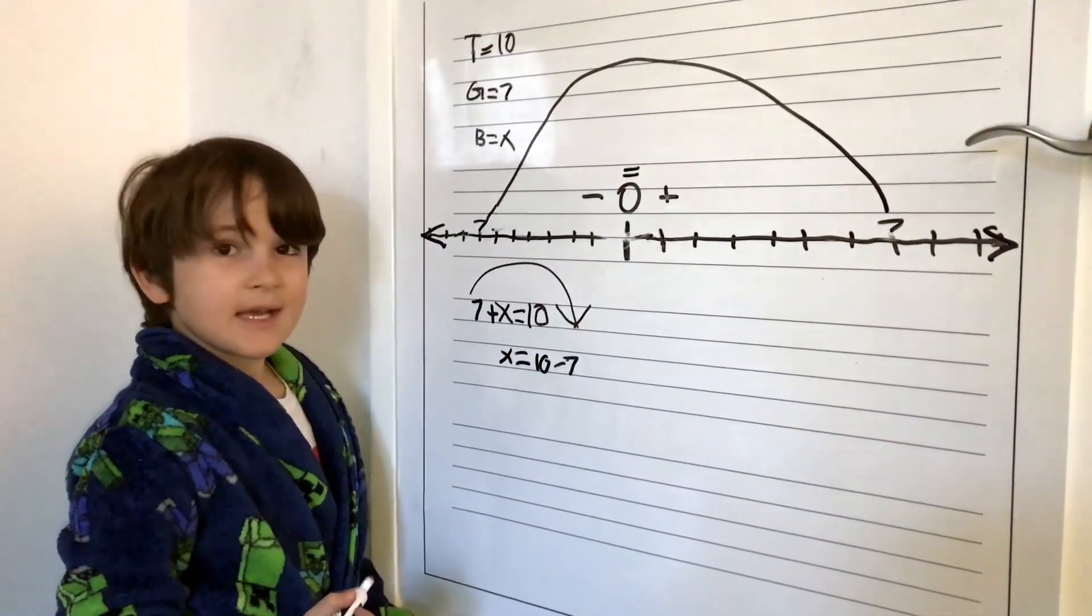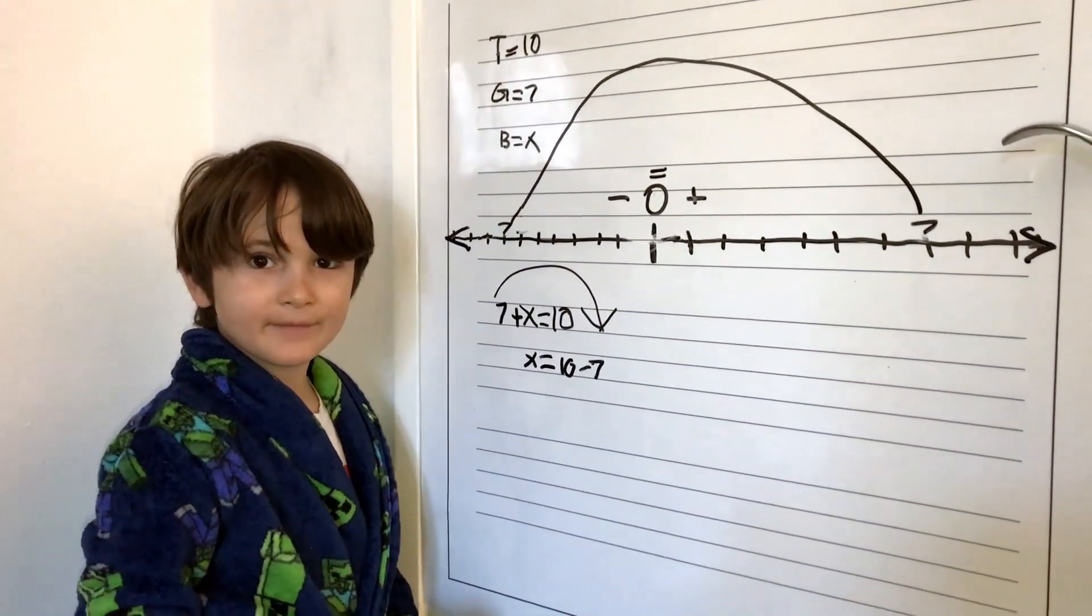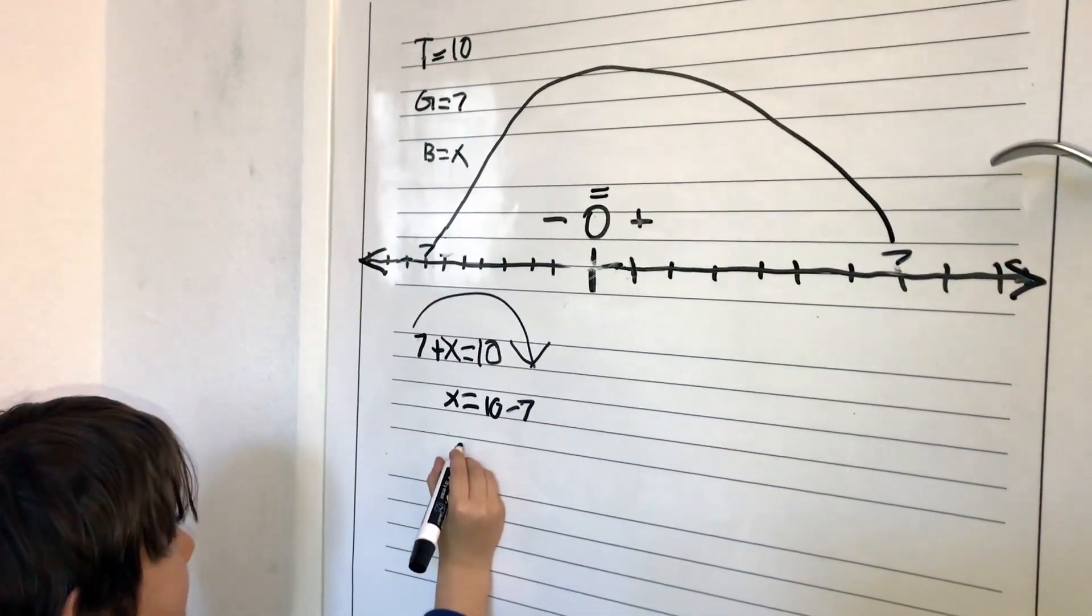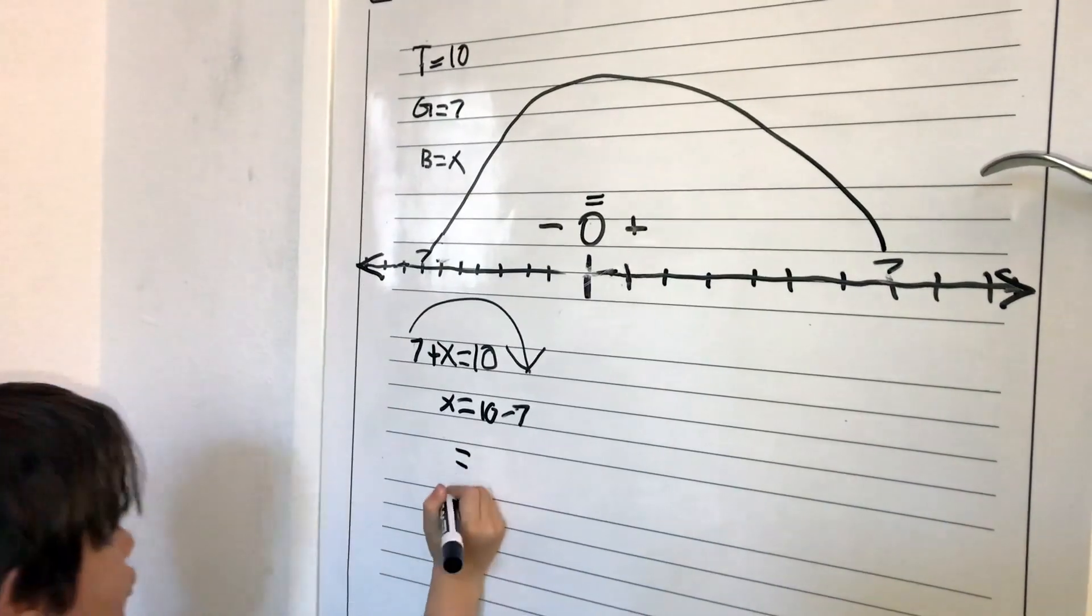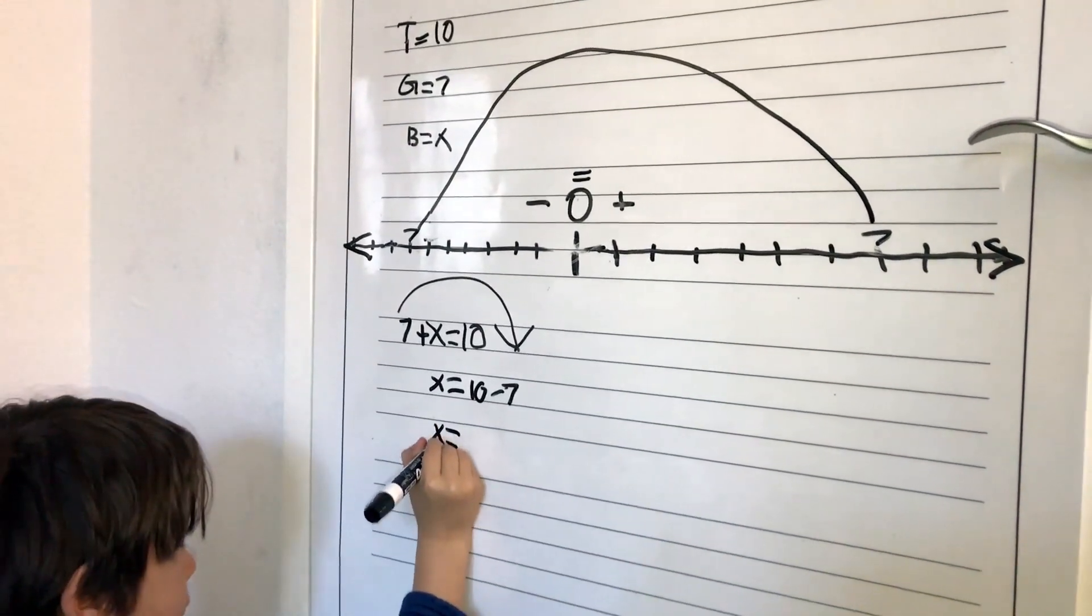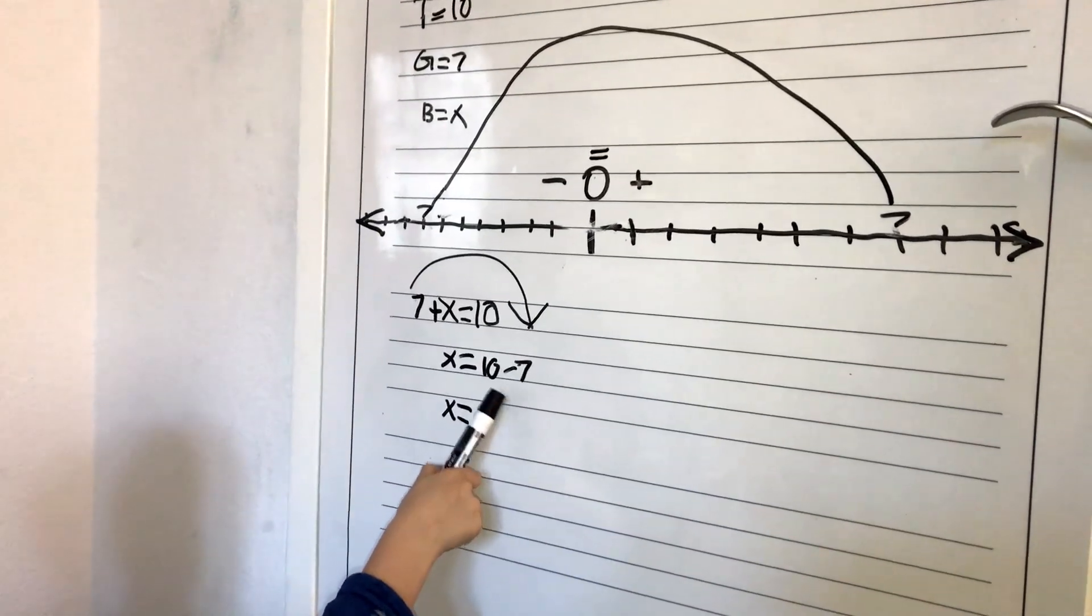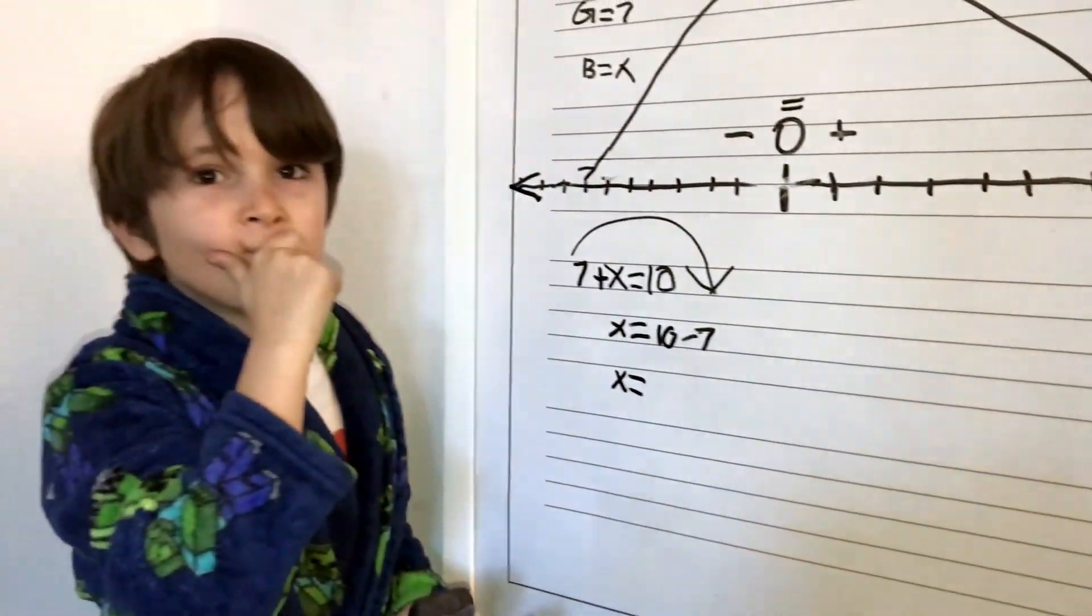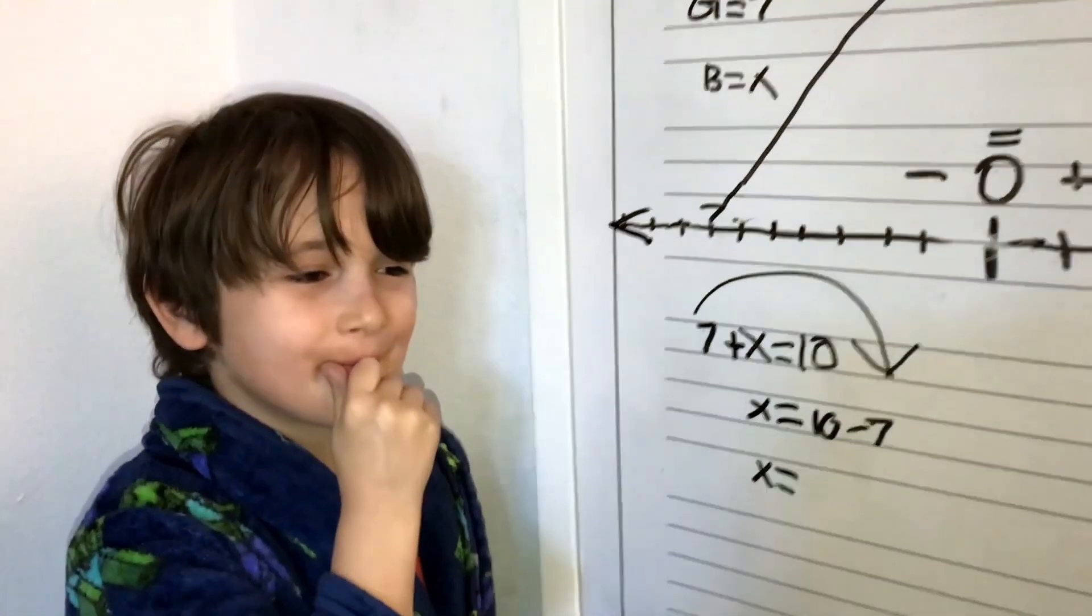The next step is that we're going to figure out the answer. What is the answer now? So we are going to be making the answer that equal goes over here. So x equals... We have to figure out the math problem. So ten minus seven.